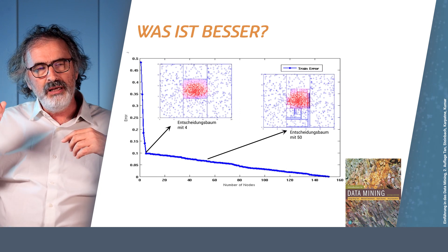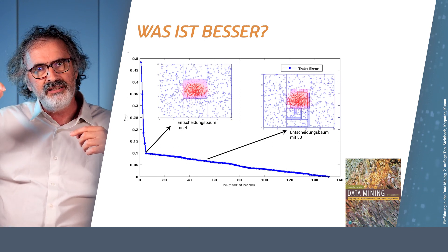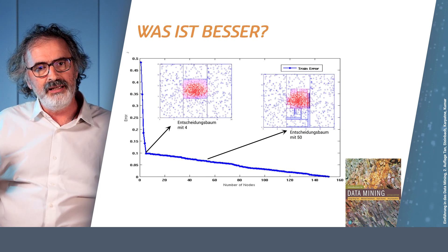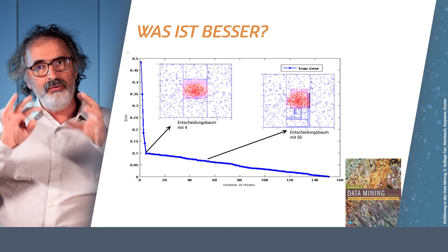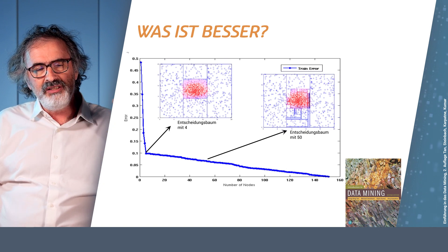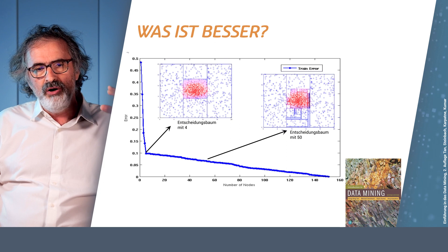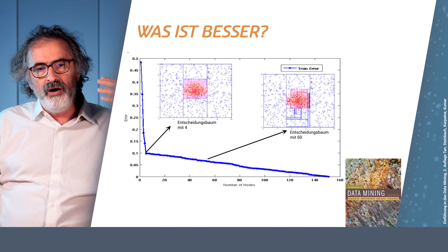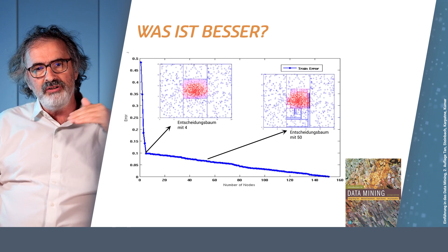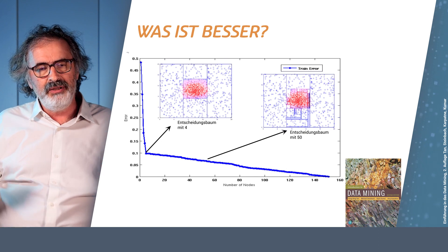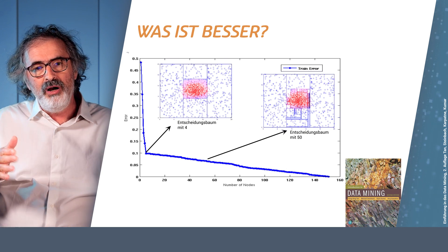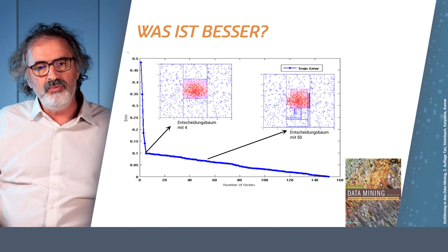If I only do four rules, there will obviously be some red points inside the box or some blue points outside — these are mistakes. But if I use many more rules, I will be fitting nicely. This is what the blue line illustrates: over time, as the number of rules increases, the error gets smaller and smaller. This sounds like good news, reinforcing the idea that the more complex we learn, the better it works.